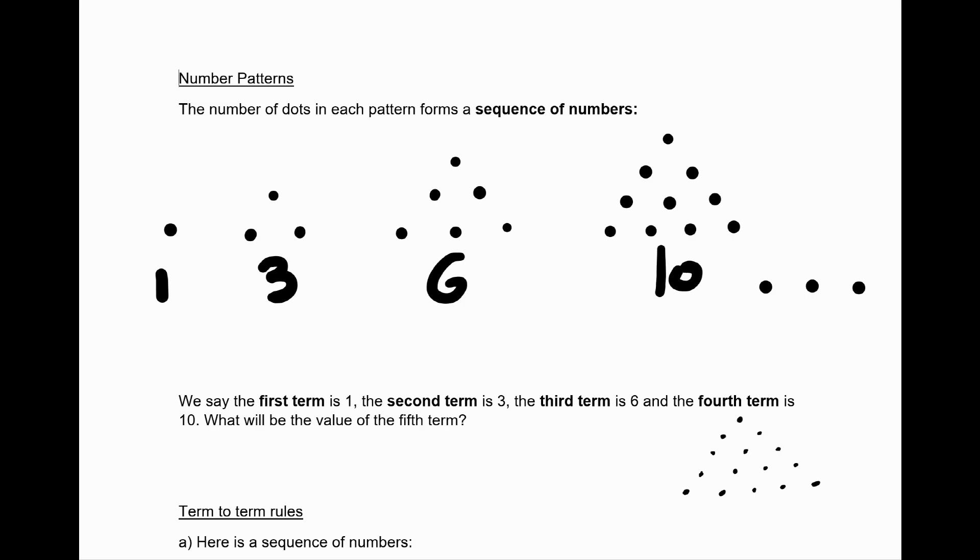To work out what the fifth term is, we need to count how many dots there are. There are 5 on the base, 6, 7, 8, 9, 10, 11, 12, 13, 14, 15. So we can say the value of the fifth term is 15.